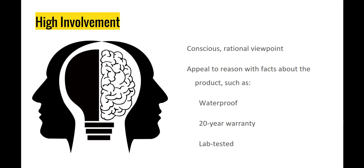When marketing a high-involvement product, one where people form attitudes through the high-involvement hierarchy, you want to appeal to reason with facts. For instance, if you're selling a high-end raincoat over $200 that's a practical investment, you want to appeal to people's reason. Say it's waterproof, comes with a 20-year warranty, and has been lab-tested — because forming a positive attitude is a high-involvement process involving cognitive learning, thinking and reasoning to reach a decision. You want to appeal to people's rationality in that case.